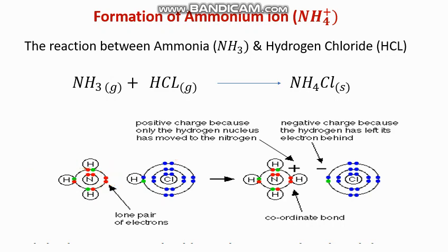The ammonium ion NH₄⁺ is formed by the transfer of a hydrogen ion — which is simply a proton — from the hydrogen chloride molecule to the lone pair of electrons on the ammonia molecule.